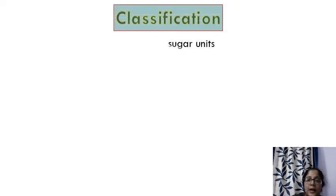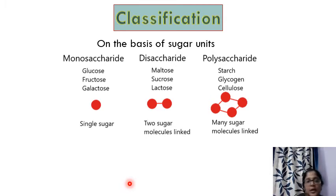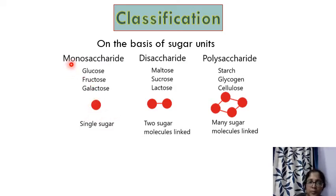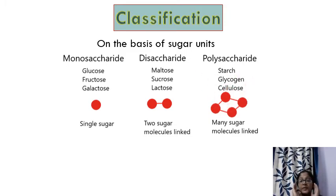Classification can also be understood by how the sugar units are linked. Monosaccharides are single sugar molecules — just one unit. Disaccharides are two molecules linked with a bond. Polysaccharides are more than two molecules linked with bonds. We will cover monosaccharides, disaccharides, and polysaccharides in detail in separate videos.